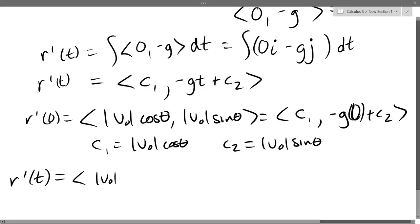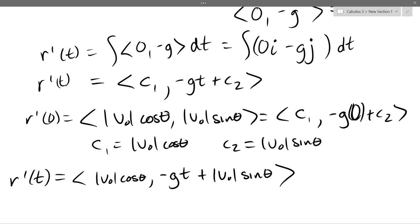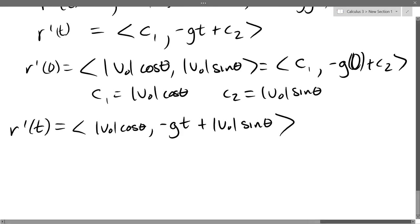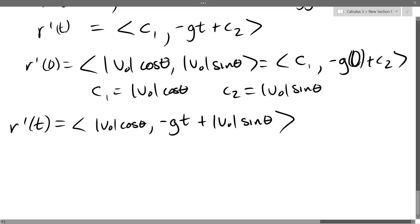So putting this all back together with our original r prime, we have magnitude v0 cos theta, comma, negative g t, plus v0 sin theta. So we're going to get r of t by taking an antiderivative another time. And we're going to get some more constants showing up. So I don't want to use c1 and c2, so we'll call them c3 and c4 so we don't reuse the names.